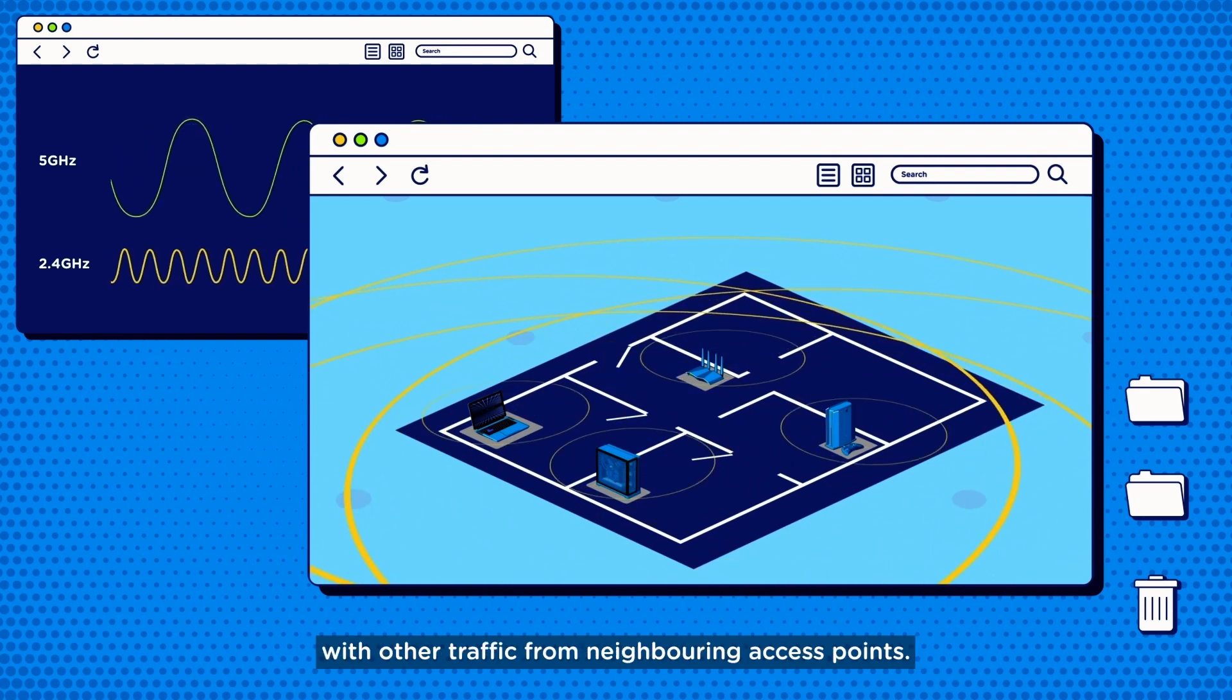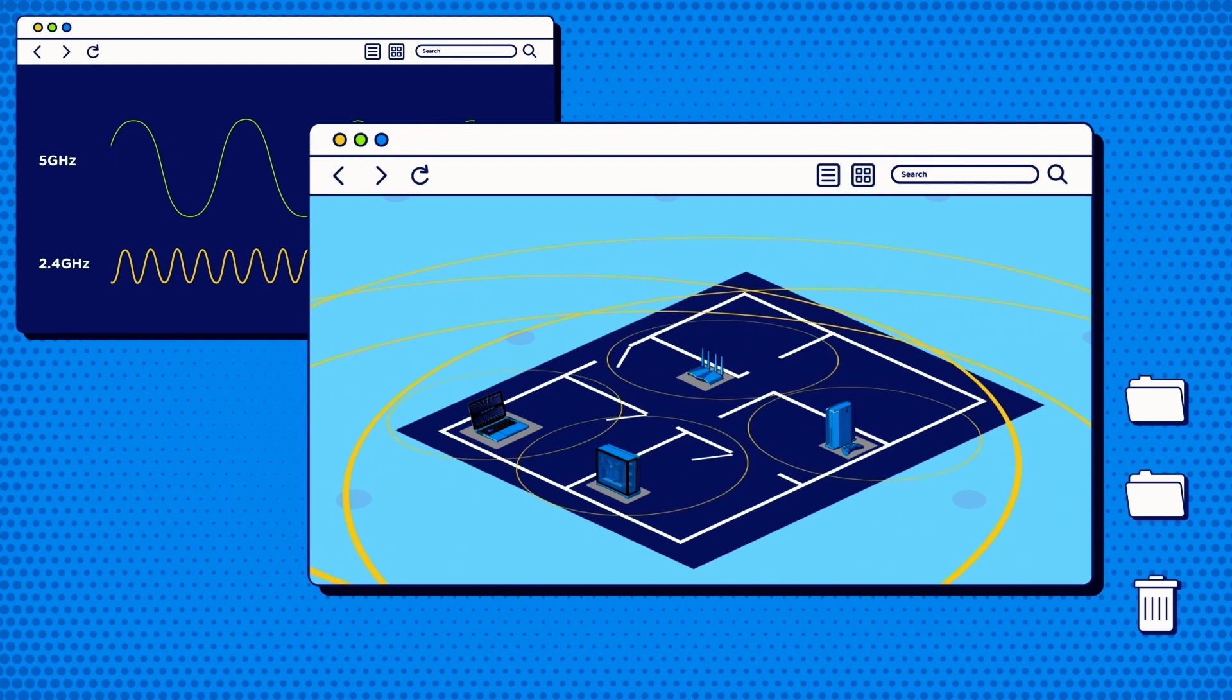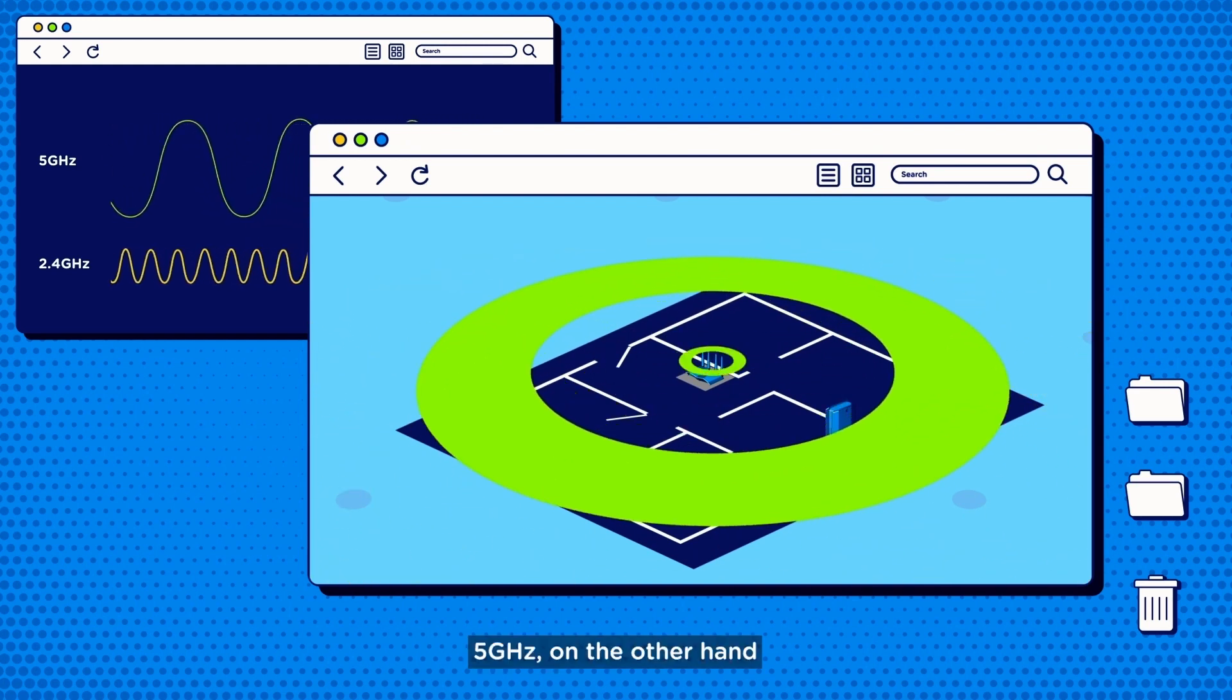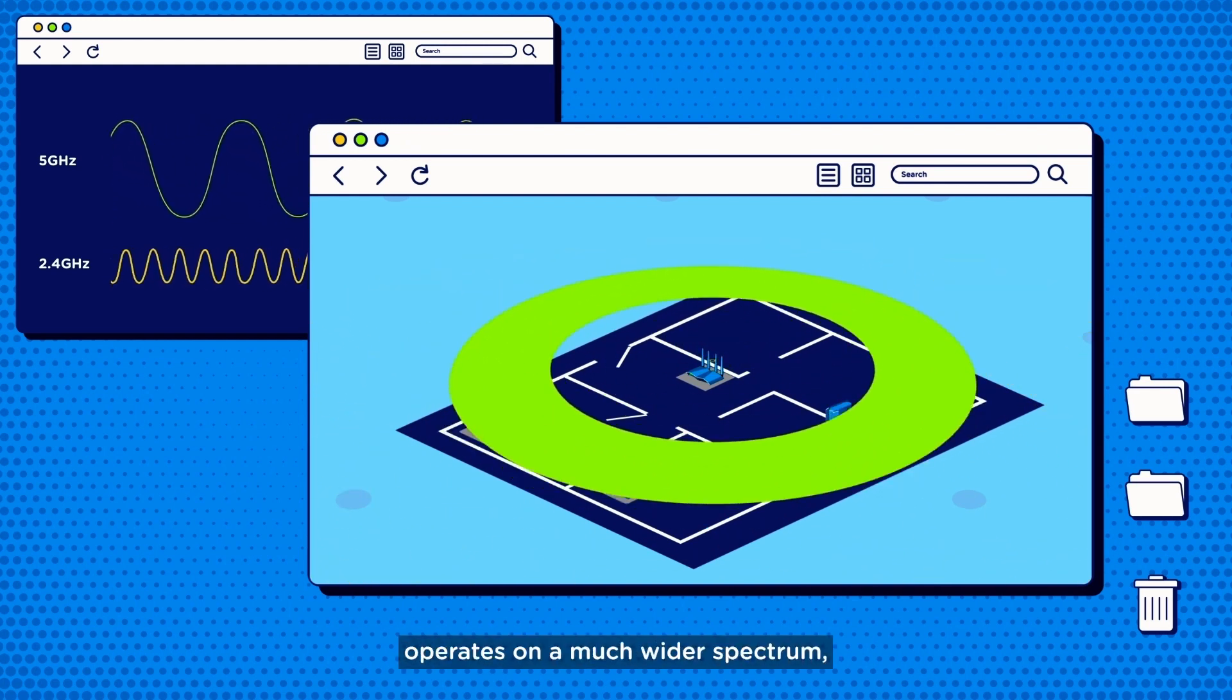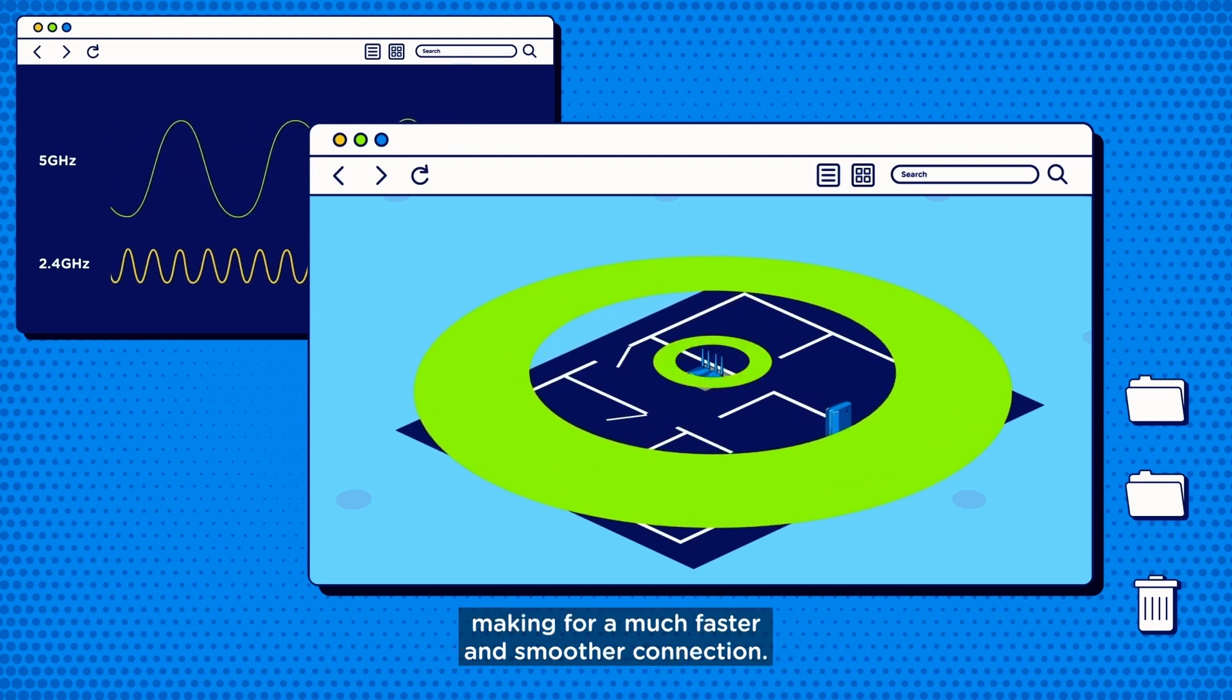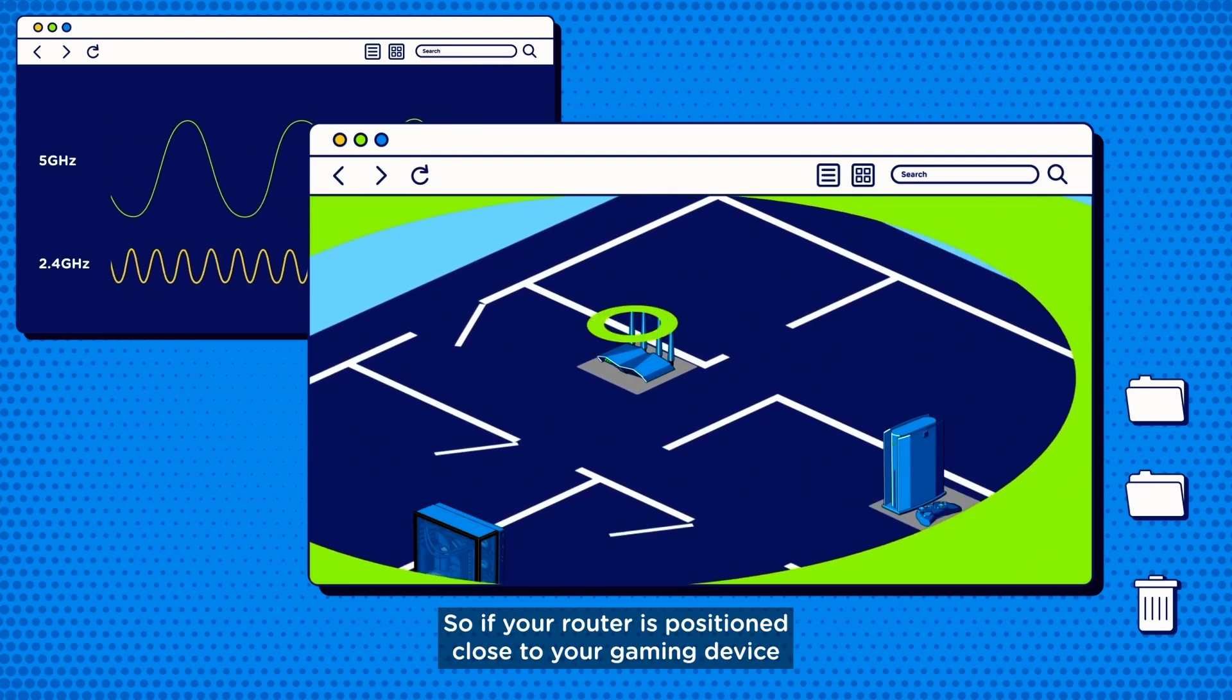5 gigahertz, on the other hand, operates on a much wider spectrum, making for a much faster and smoother connection. So if your router is positioned close to your gaming device, this is the frequency you should be on.